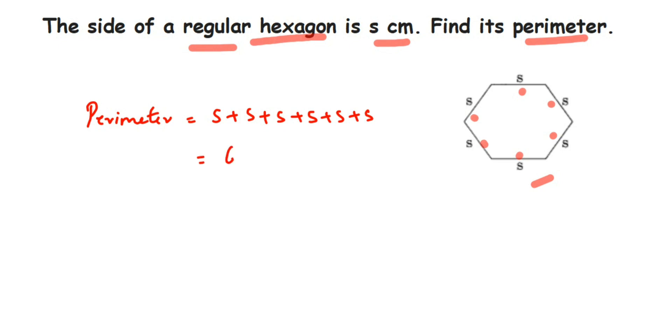So 6s centimeters is the perimeter of the regular hexagon.